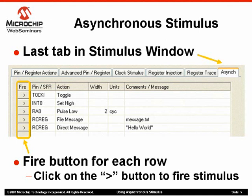In our terminology, when you click the button, you fire the asynchronous stimulus. Initially, the arrow symbol does not appear on a new row. It will show up as soon as all the elements of the stimulus on the row are defined and you click the mouse away from the cell. So when you see an arrow symbol, you can fire this stimulus. If you don't see it yet, something might still be missing.